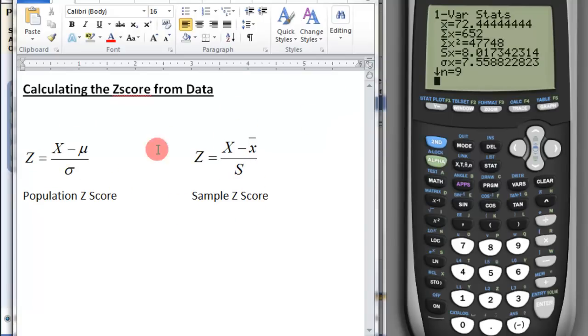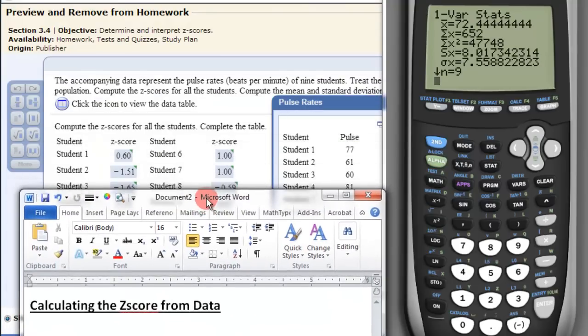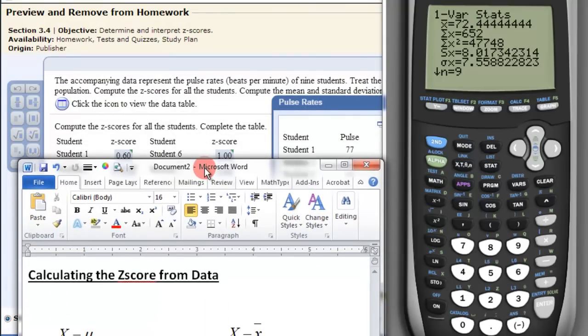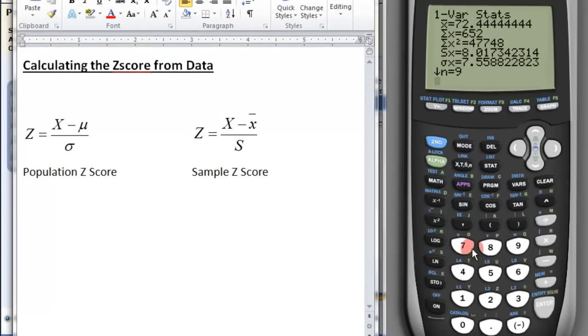On the calculator, I look for my first x value. We'll use student one. I'm not going to do them all. Student one has 77 as the x value. So I'm going to do, in parentheses, 77 minus—now μ, that's the same as the mean. The means will be the same in the case of population and sample here.